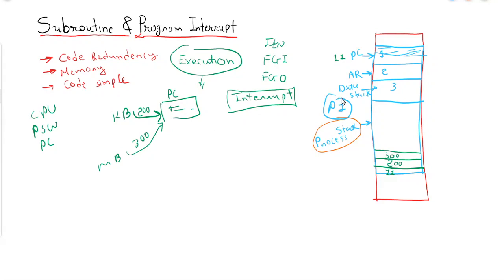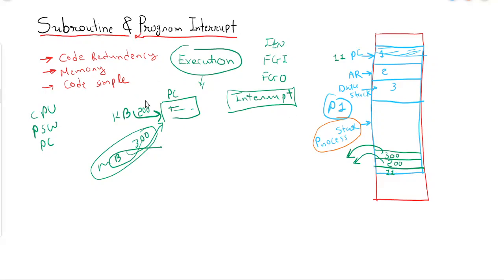Once the printer interrupt is managed, a pop operation will be performed, so execution will resume with the mouse interrupt. Once the mouse interrupt is over, then again a pop will be done. This will transfer control back to the previous process where we had paused execution. This is how nested interrupts are managed.